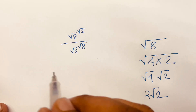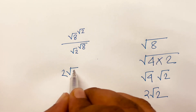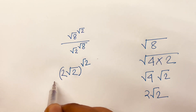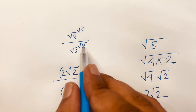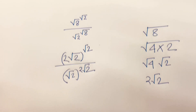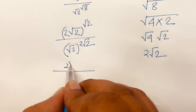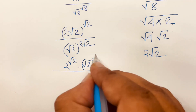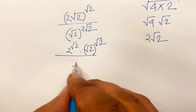So square root 8 equals 2 square root 2. I can rewrite the expression: here is square root 2 bracket to the power square root 2, over square root 2 bracket. This square root 8 becomes 2 square root 2. Then I can write 2 to the power square root 2 times square root 2, to the power square root 2.